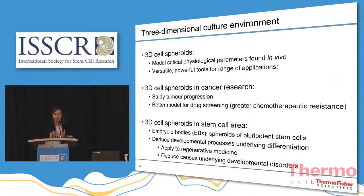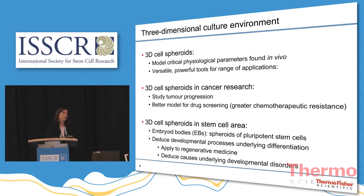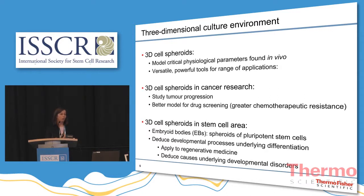Spheroids are, as an example, created from pluripotent stem cells, which we refer to as embryoid bodies, or EBs in short. Since embryoid body formation is a commonly used method to initiate the differentiation of pluripotent stem cells, they are very valuable tools to deduce the developmental processes underlying differentiation. This knowledge can be applied to the area of regenerative medicine. Similarly, if you use patient-specific cells, embryoid bodies can be very valuable to deduce the causes of any developmental disorders.